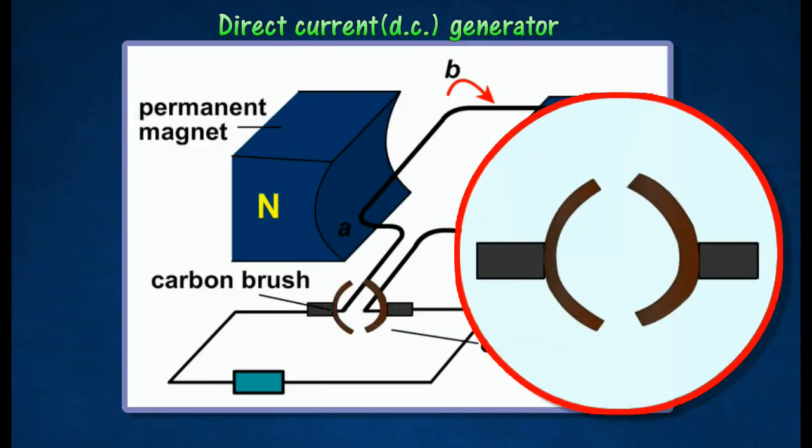As a result, the current flowing through the external circuit will always flow in the same direction, even though the direction of the current induced in the coil changes every time the coil passes through the vertical position.